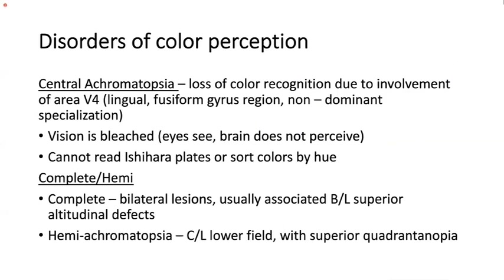Disorders of color perception can be categorized similarly to object perception disorders. Central achromatopsia is loss of color recognition due to involvement of area V4, located in the lingual-fusiform gyrus region, which has a non-dominant hemisphere specialization. Vision for these patients is bleached — they cannot read Ishihara plates and cannot sort colors by hue. If bilateral, it may be complete. If the inferior lip of the calcarine cortex is also involved bilaterally, there may be an associated bilateral superior altitudinal field defect.